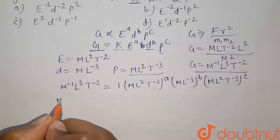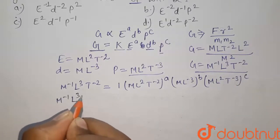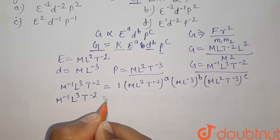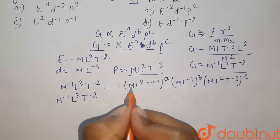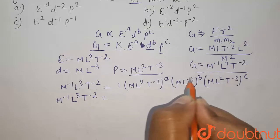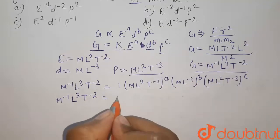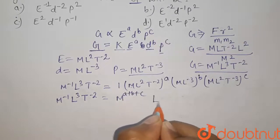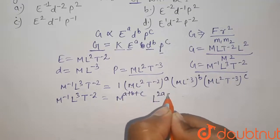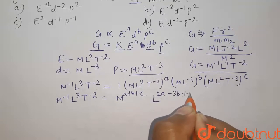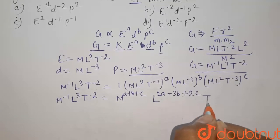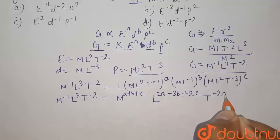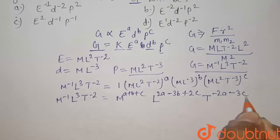Now let us simplify it. So here it is M minus 1 L3 T minus 2. And on right hand side it will be M to the power A plus B plus C, L to the power 2A minus 3B plus 2C, and T to the power minus 2A minus 3C.